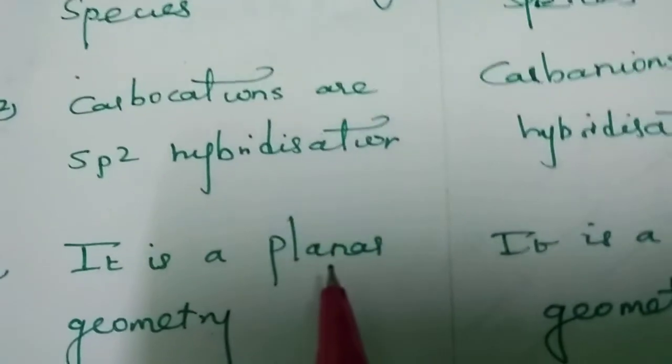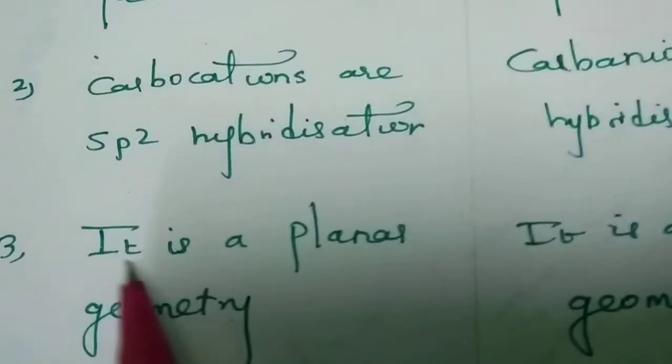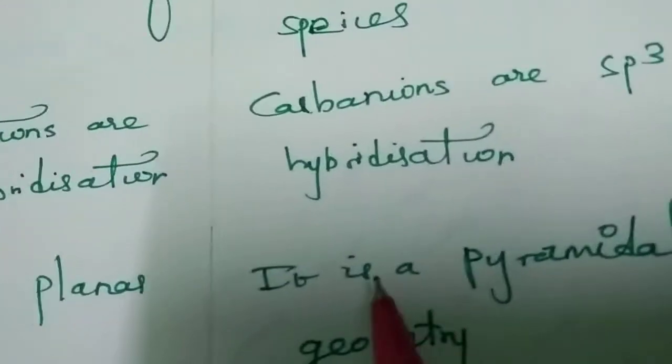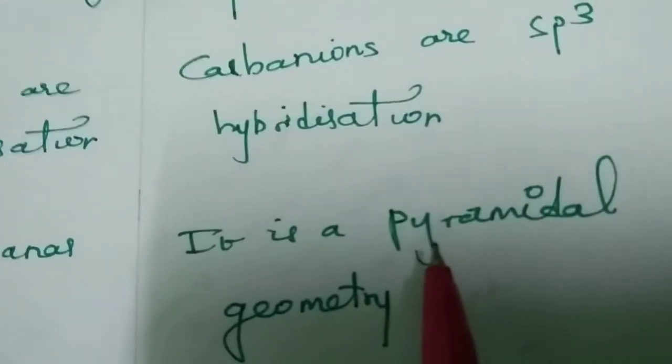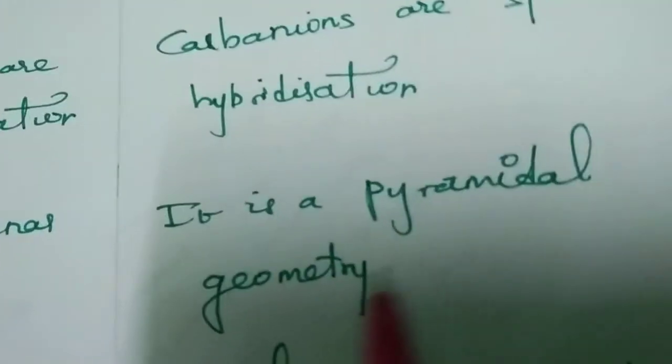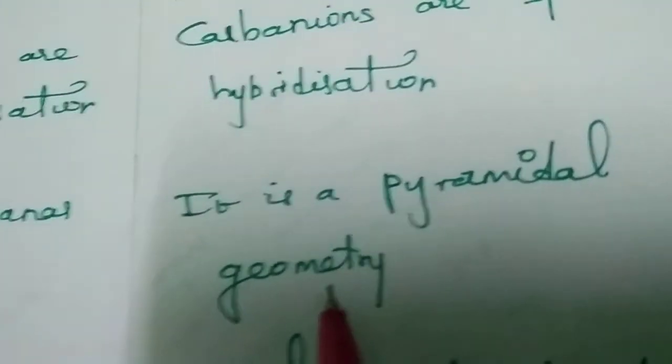Carbocations have planar geometry, whereas carbanions have pyramidal geometry.